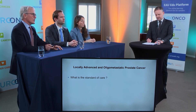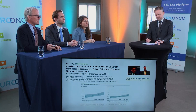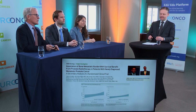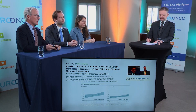On the question of primary presenting M1 disease: we published in 2018 as part of Stampede the effects of treating the primary in metastatic disease. We showed that treatment of the primary was effective only if there was low-burden disease. This matched data from the HORAD trial in Holland, which had a very similar hazard ratio, and we combined that data in a meta-analysis.